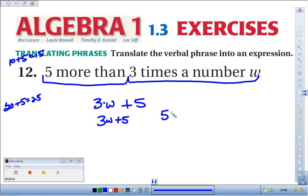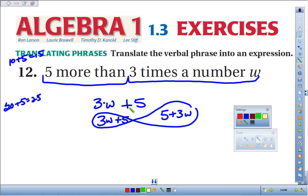Now, if you had written 5 plus 3W, because of the commutative property of addition, these both would yield the same result. But if we were truly translating it, this would be your best translation.